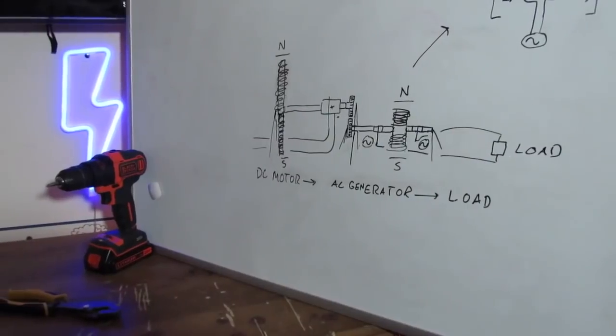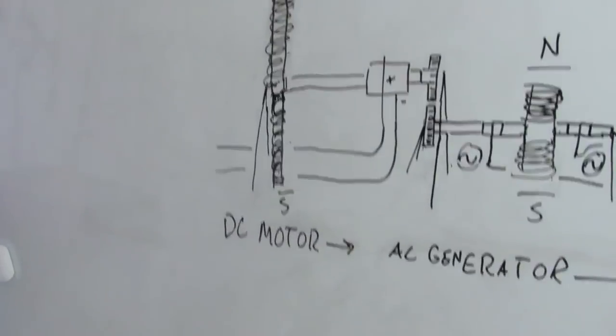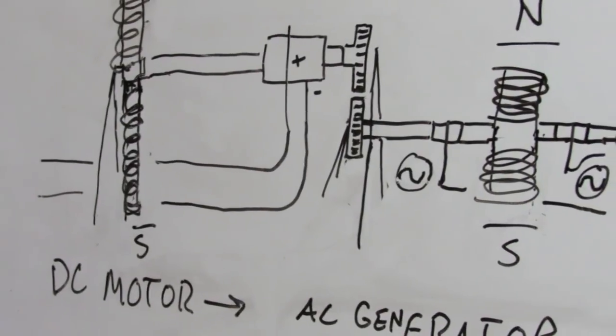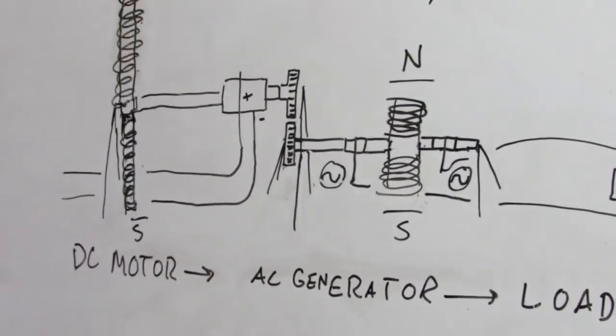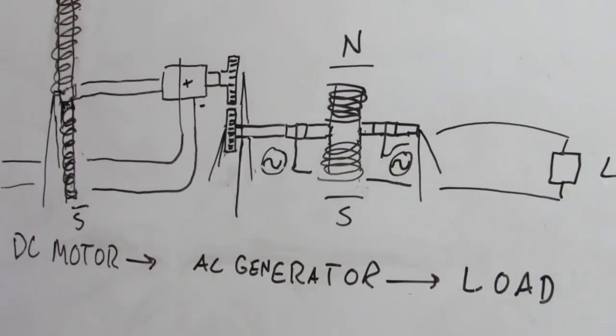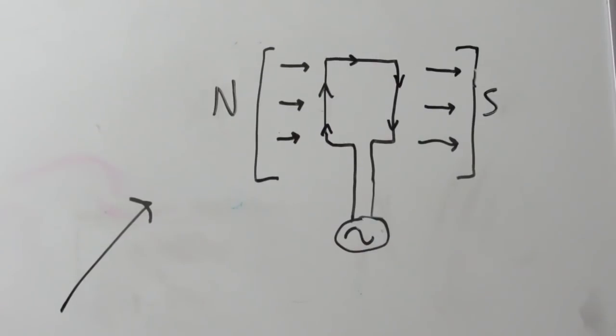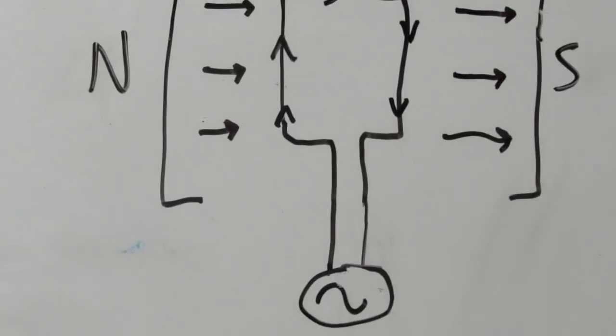Let's go to the whiteboard real quick. So first I will be setting up my DC motor and I'm gonna have gears attached to both the DC motor and the AC generator. The way that an AC generator works, it mainly relies on induction. Let's say we have a coil here in the middle.